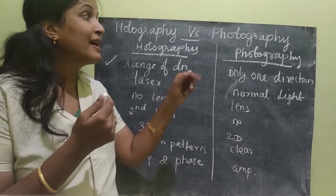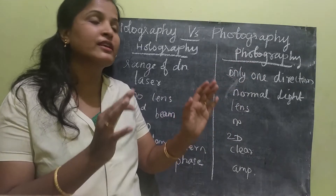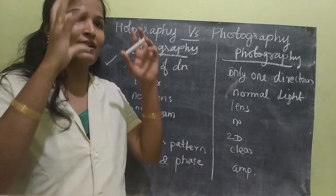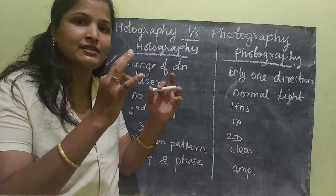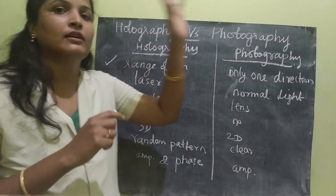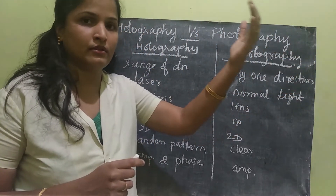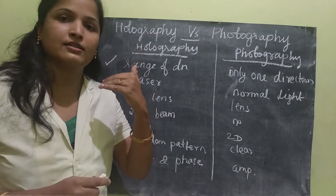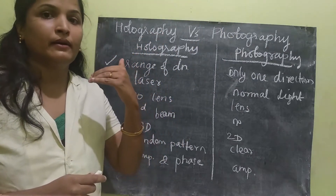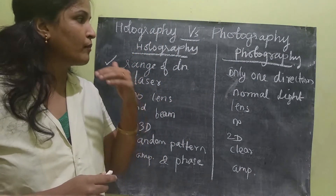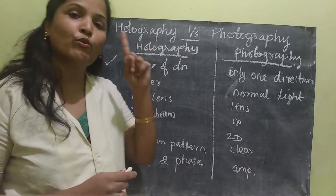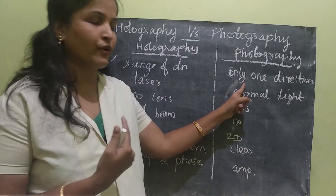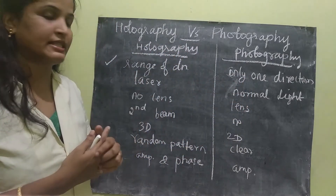But in photography it is used in only one direction. As we already know, once the photograph is taken the light falls directly under the lens, so because of that only one direction of light is captured. That is the first difference.